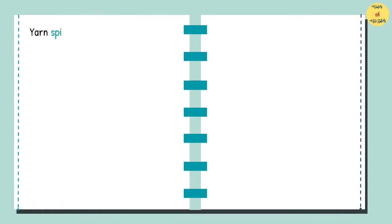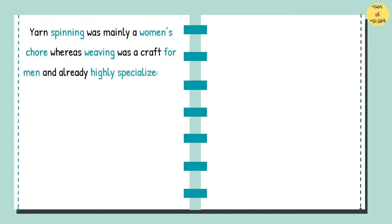Yarn spinning was mainly a women's chore whereas weaving was a craft for men and already highly specialized with silk, wool, and linen weavers.